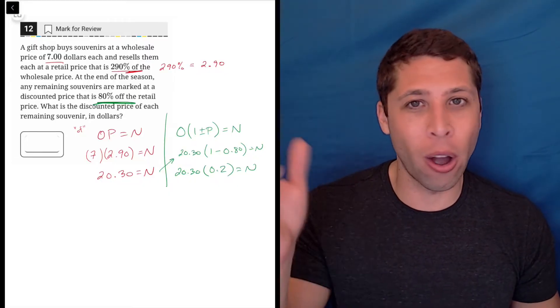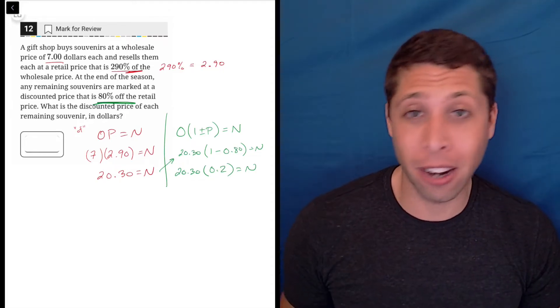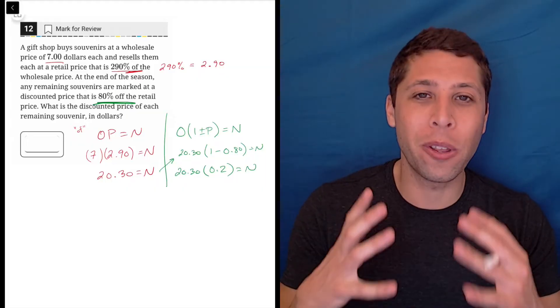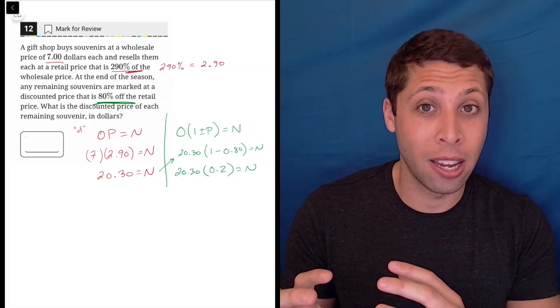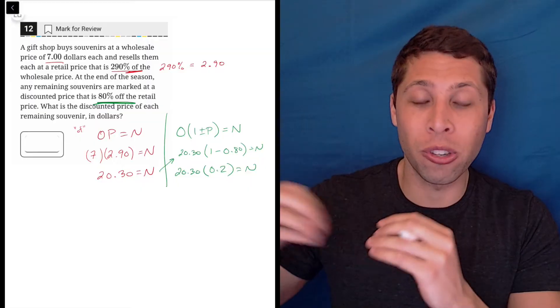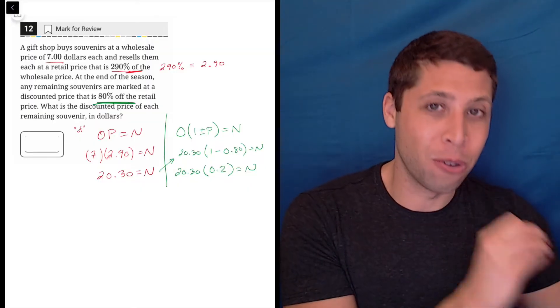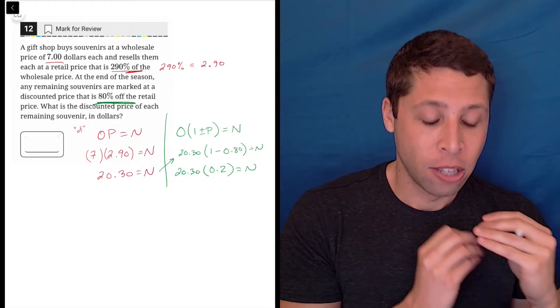We don't talk that way ever. You would never go into a store and say, oh, I have a coupon for 90% on your price. No, it's a coupon for 10% off the price. So the problem with percentages, the reason they're so tricky, is that the language that we use in our everyday life is different from the math that we use to calculate these things. So you've got to be really careful.